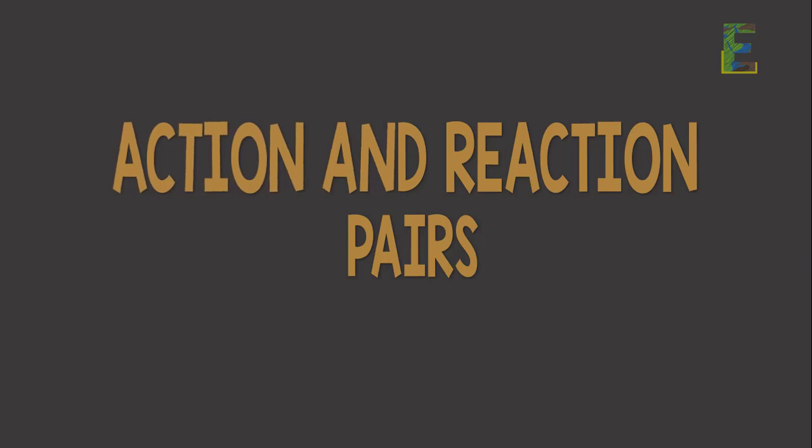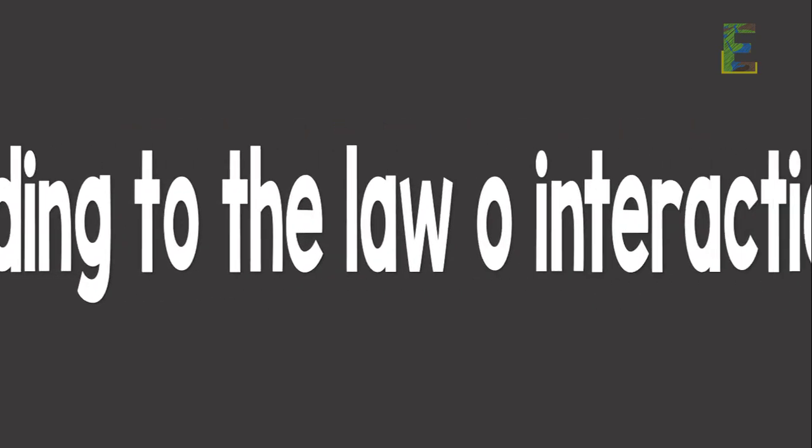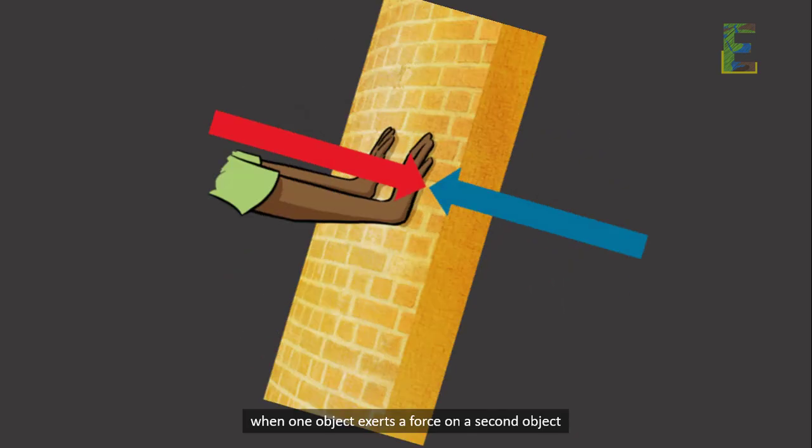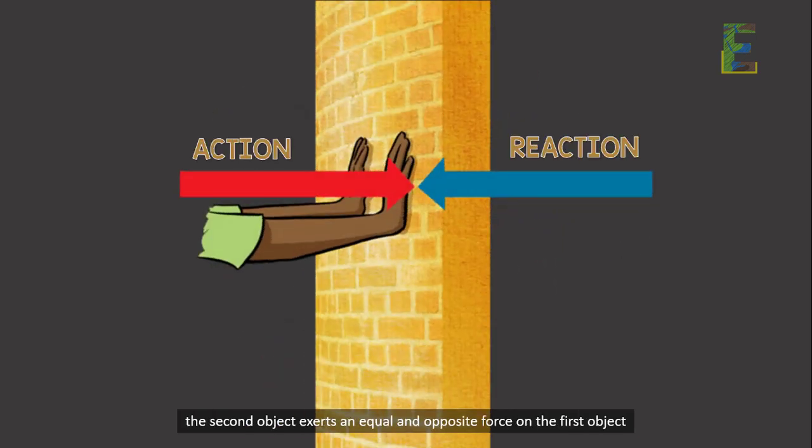Action and reaction pairs. According to the law of interaction, when one object exerts a force on a second object, the second object exerts an equal and opposite force on the first object. These force pairs are called action and reaction pairs.